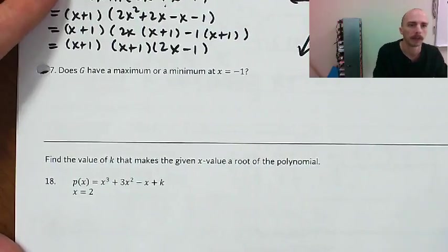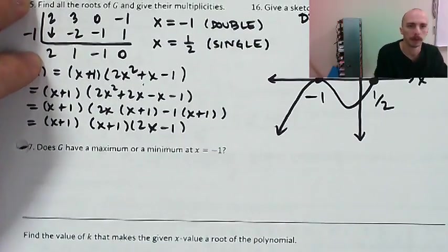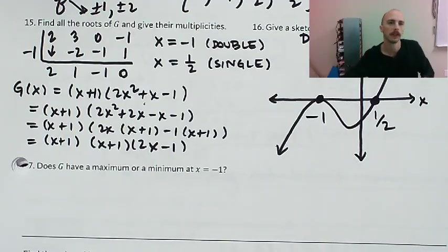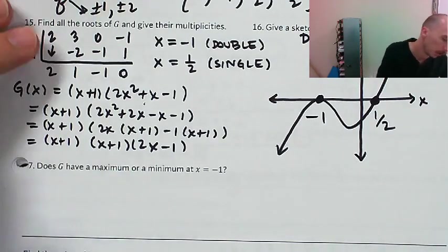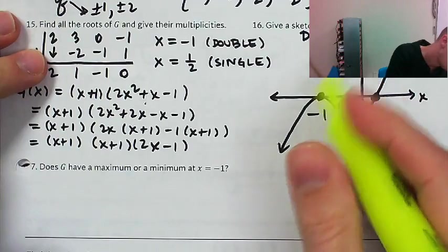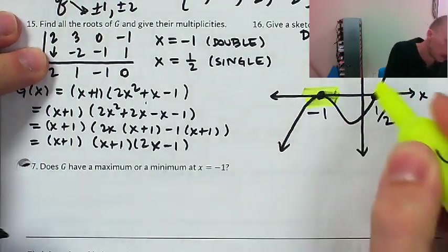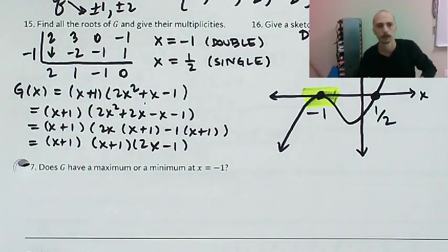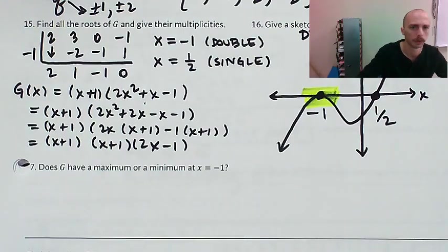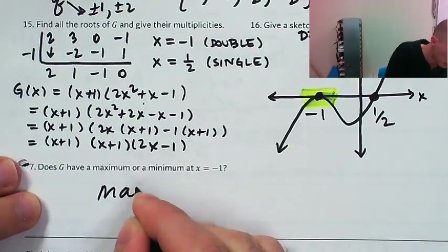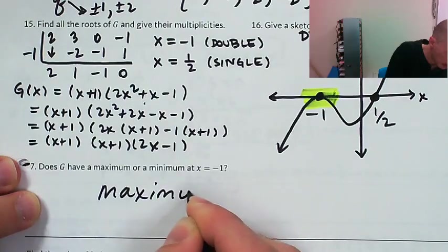Does g have a maximum or a minimum at x equals negative 1? That's going to be a maximum, because right there at x equals negative 1 the graph of g is going from increasing to decreasing. So I would say maximum.